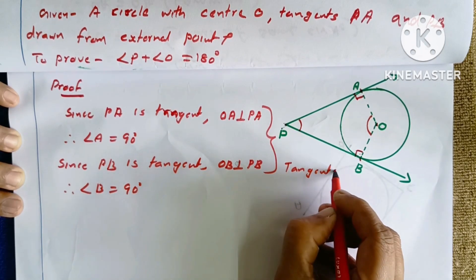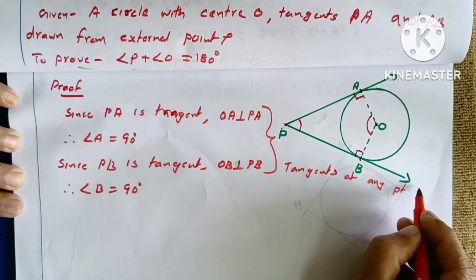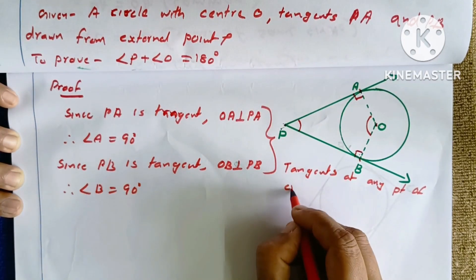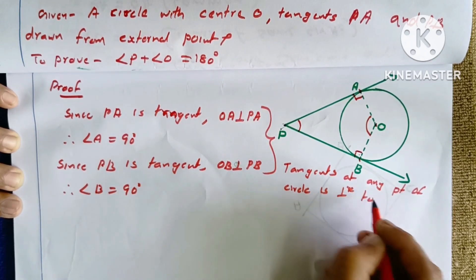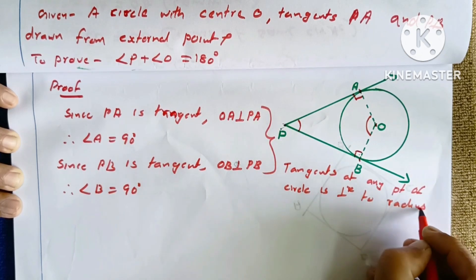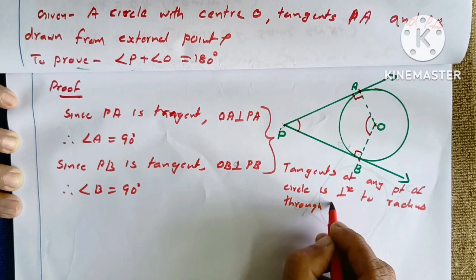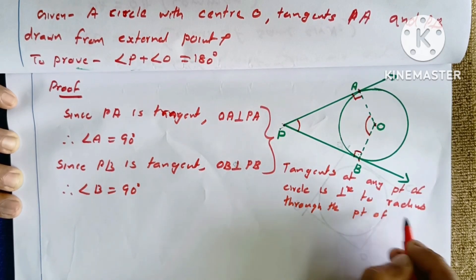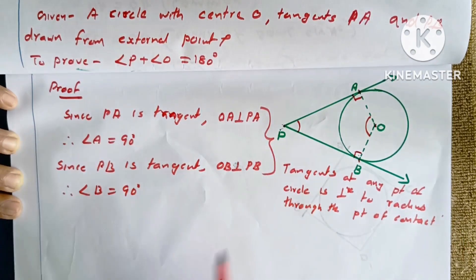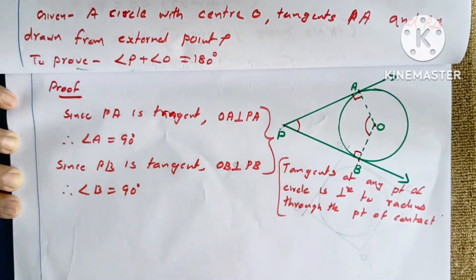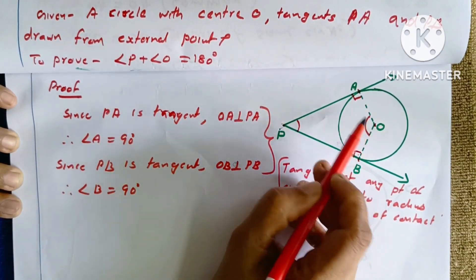The reason is: the tangent at any point of a circle is perpendicular to the radius through the point of contact. This is the theorem used as the reason.